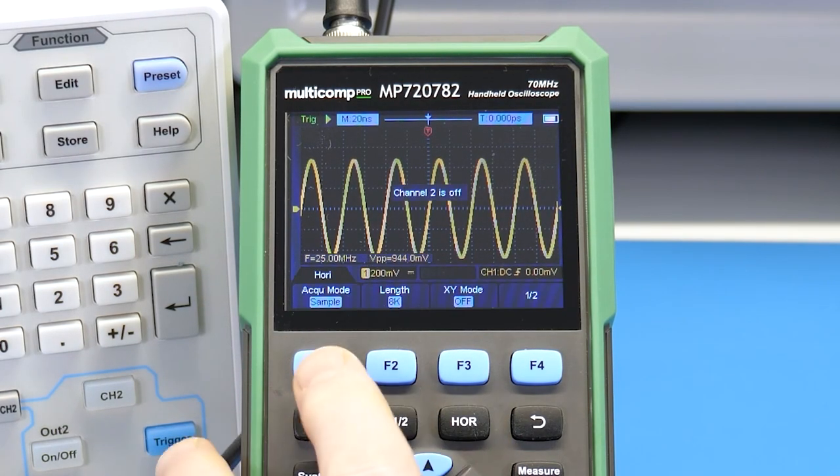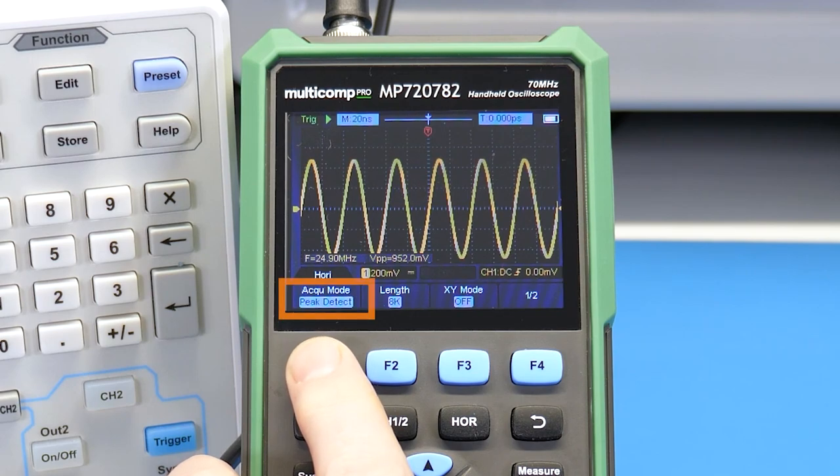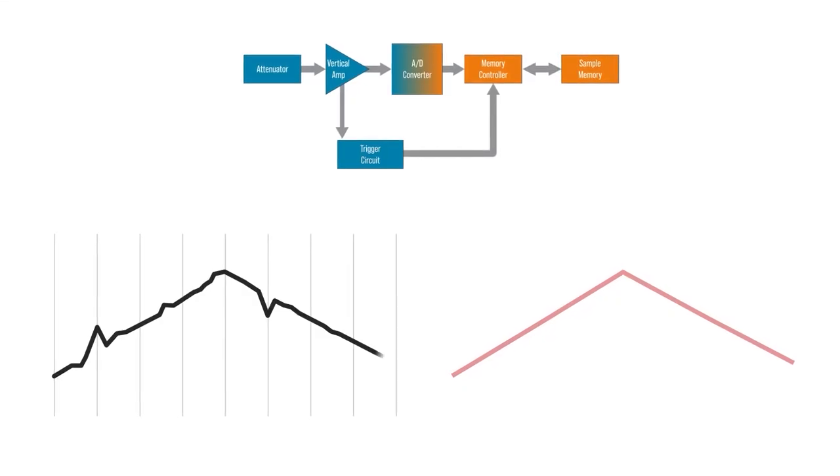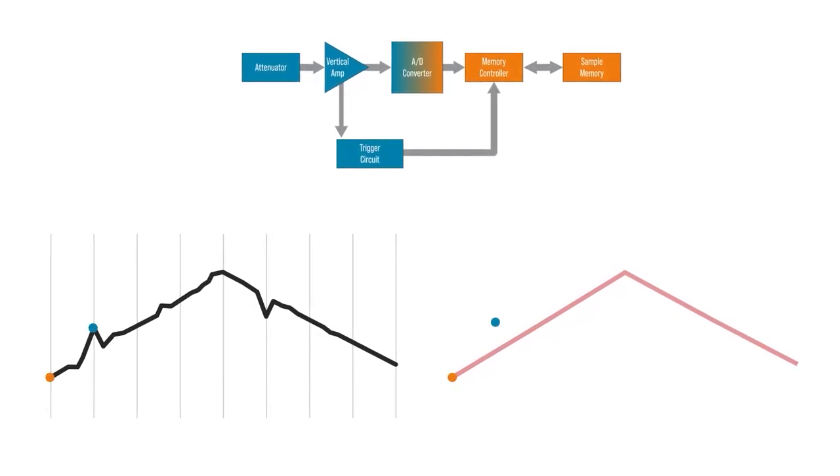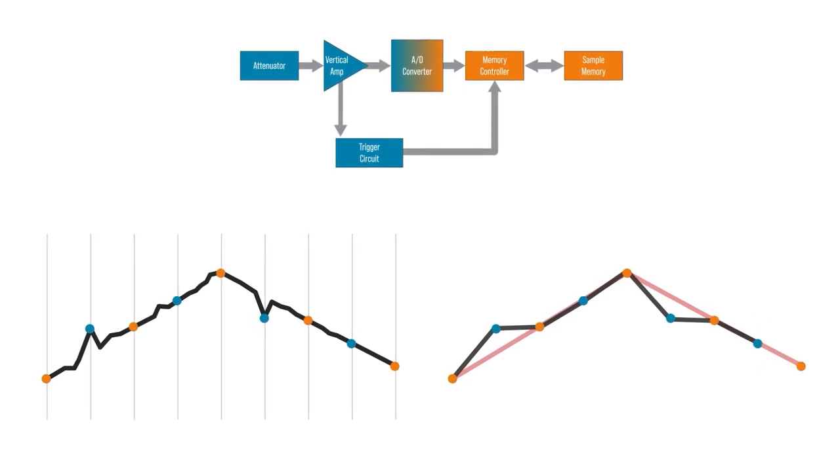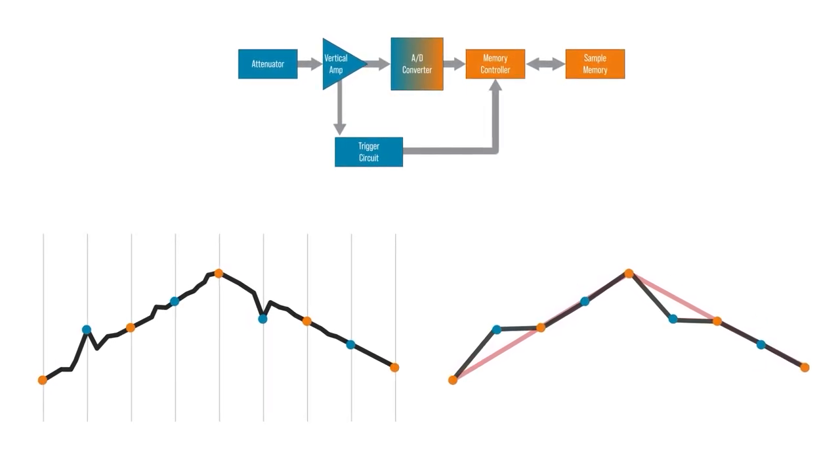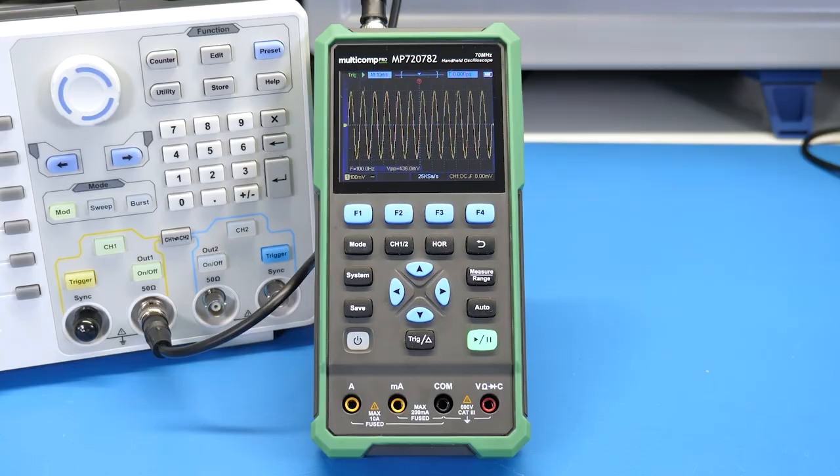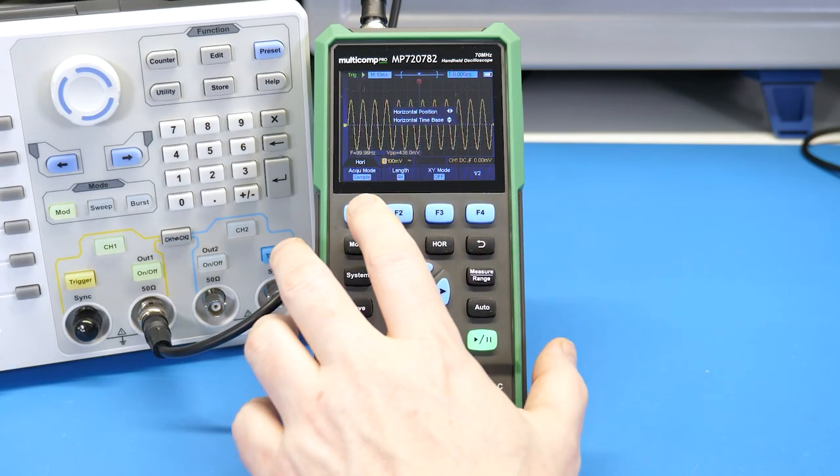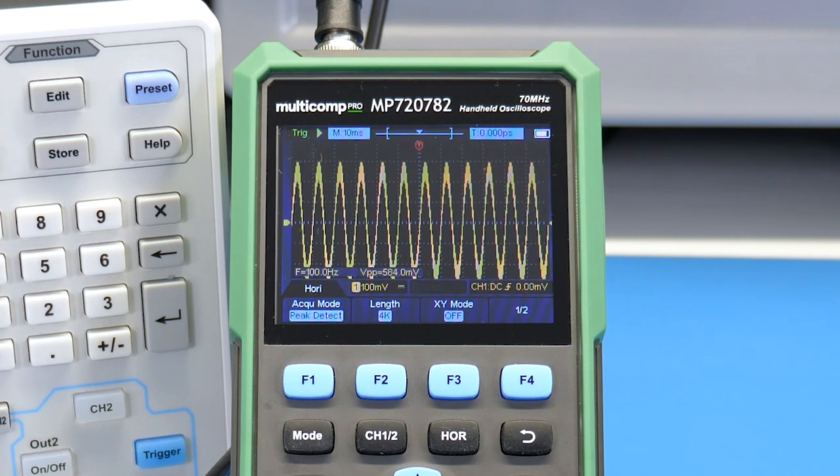In addition to the normal sample mode, the horizontal system also has a peak detect mode. When running at slower sample rates, the ADC still runs at full speed. But the memory controller only stores outliers for a slower effective sample rate. Here the slow waveform is kind of jumpy. When I turn on peak detect, we can better see the noise, which in this case is a 100 kHz modulation.